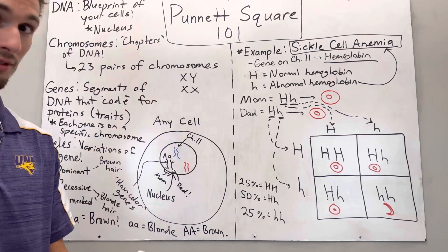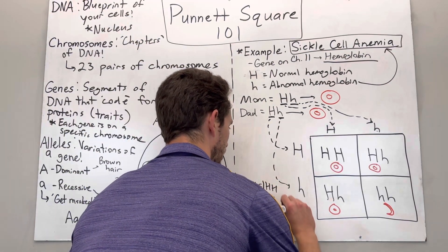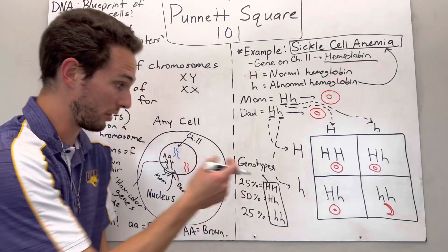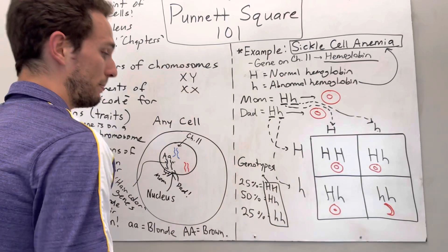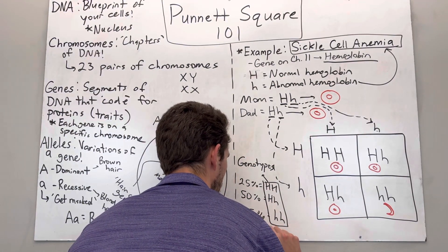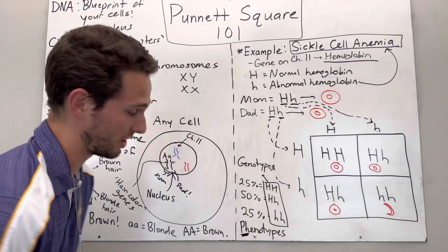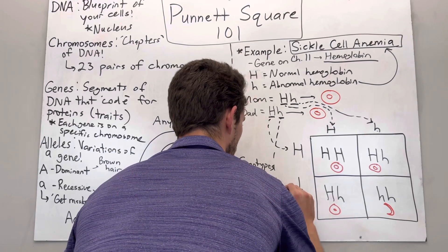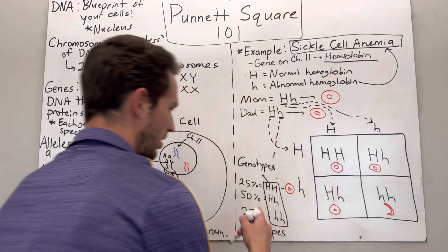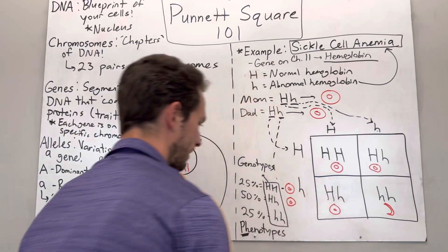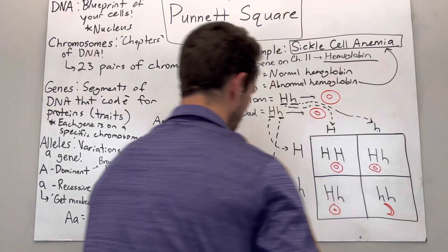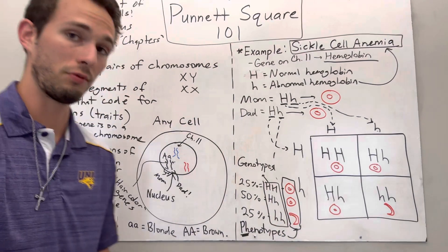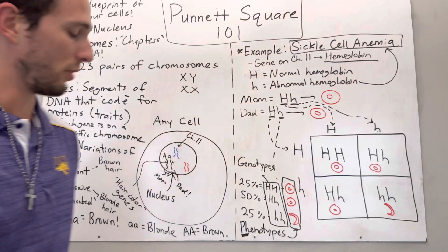We can also predict the phenotype. These letterings are called genotypes — basically, what do their alleles look like in letter form? Whereas phenotypes are the physical trait that they're expressing. The phenotype for big H, big H would be a normal red blood cell. Big H, little h would also be a normal red blood cell. Little h, little h would be the sickle cell. So we can predict both genotype and phenotype based on what we put in these Punnett squares.